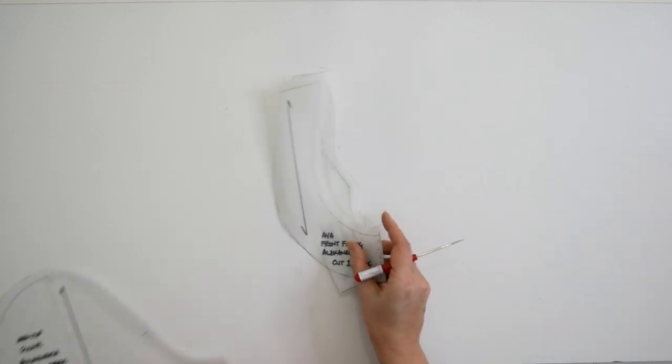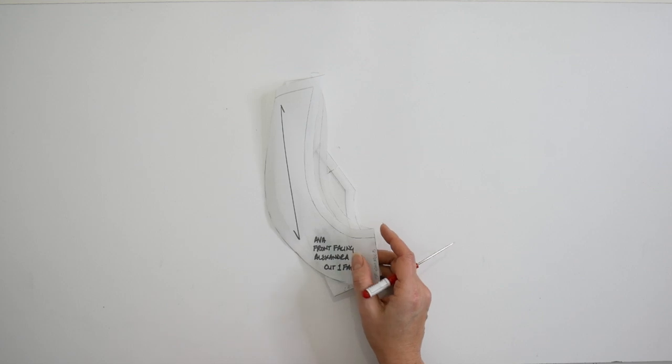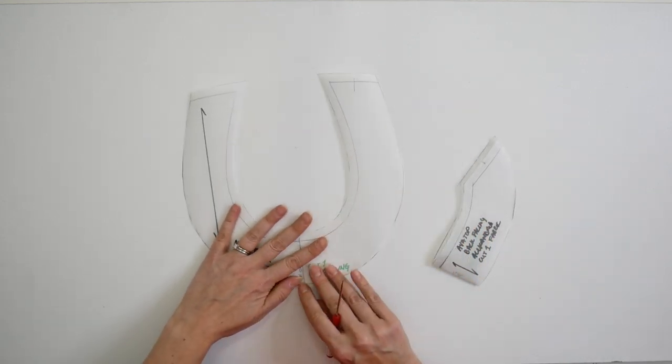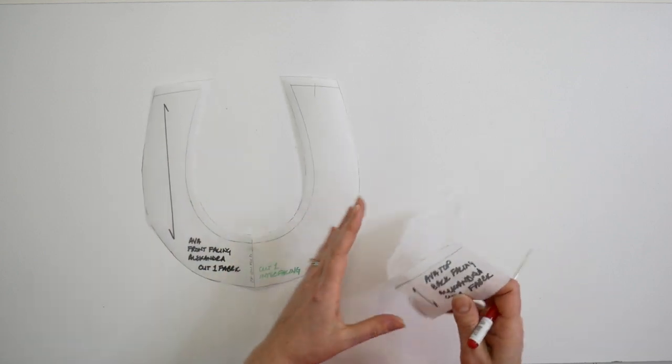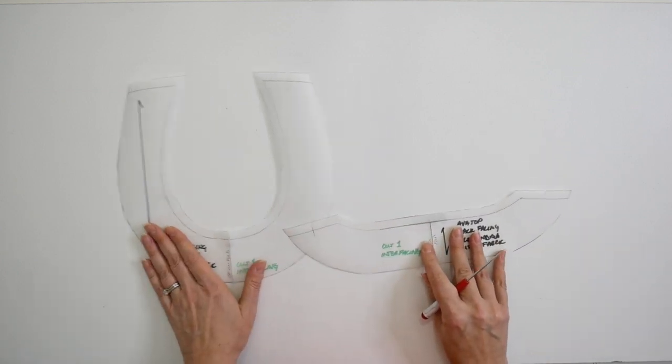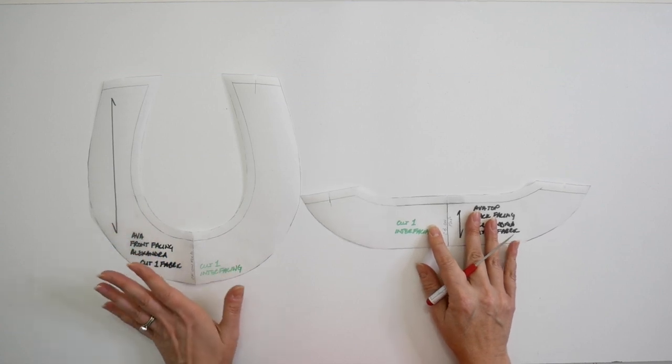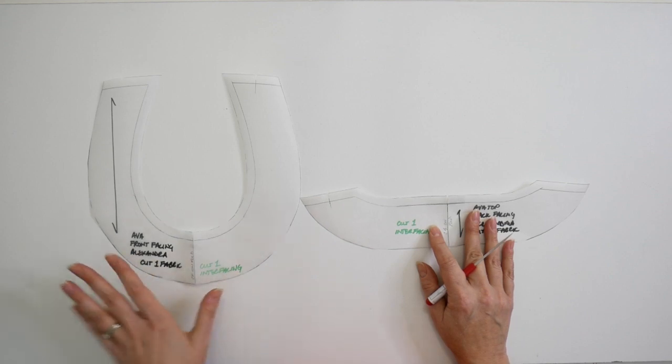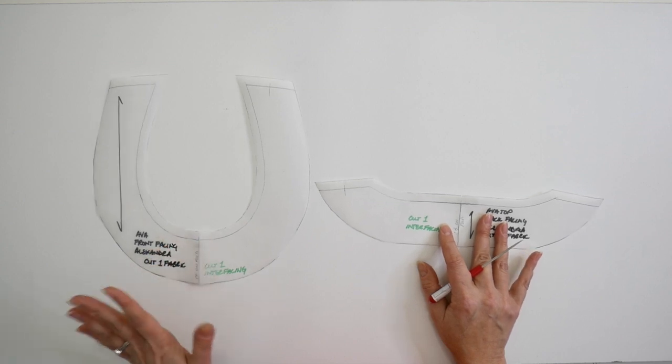And last but not least, we have the front and back neckline facing. So you can see here what I've done is actually put them on the fold. It's not necessary to do this, but it is definitely something that I like to do with facings because it just makes them a little bit bigger piece.